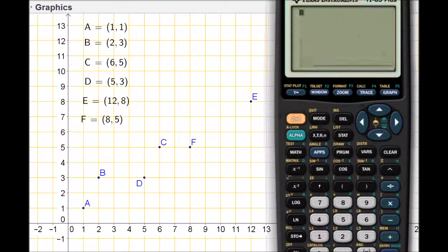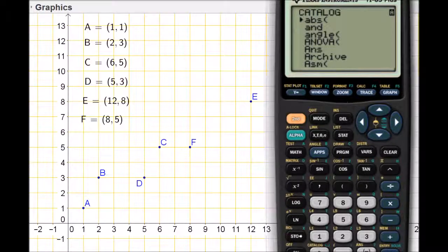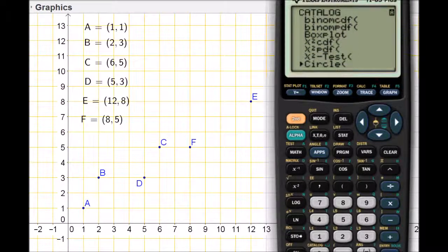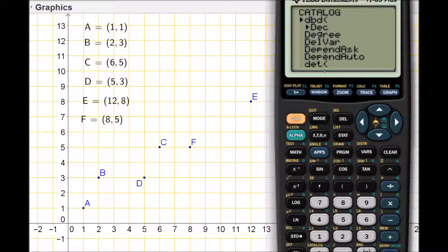I'm going to quit the graph view, and then I'm going to press second and go down to catalog. Catalog is right above the button number zero. When I press that, it gives a very lengthy list of commands that this calculator has. I can press the arrow key and go down until I get to the letter D. A little shortcut I can do is press alpha, and once alpha is pressed, I can hit the letter D. When I go to it, it'll jump to the Ds, so I don't have to scroll down quite as far.